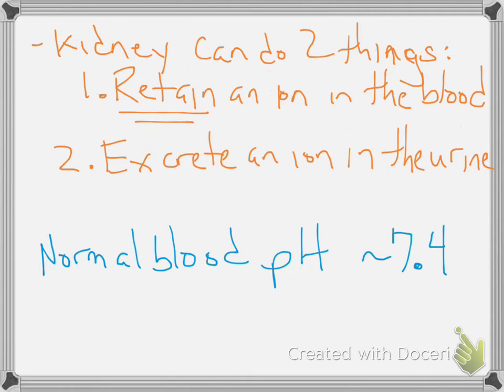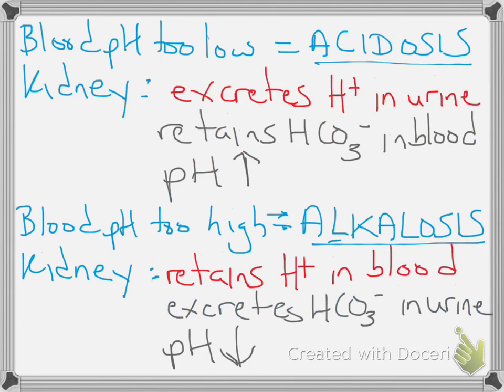The goal of all of this, and the goal of this entire negative feedback loop, is to maintain a normal blood pH of about 7.4. So let's look into how we do this.